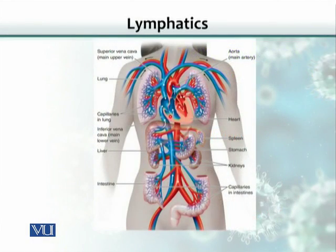As you can see, the heart pumps blood to every single organ through the arteries. That blood comes back through the veins, draining back into the heart, and then the heart pumps it again. This cycle repeats itself over and over, and that basically sustains life — providing nutrients to all cells of the body.